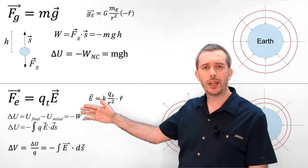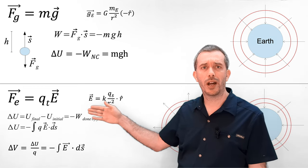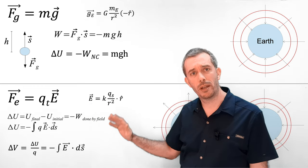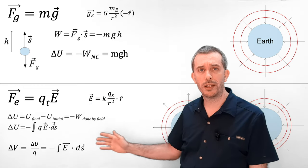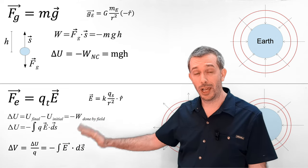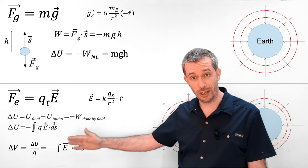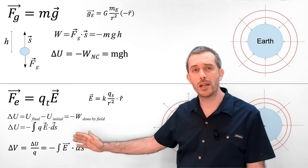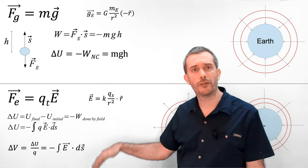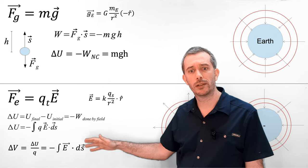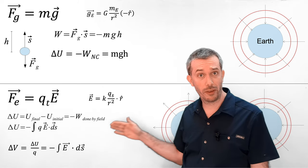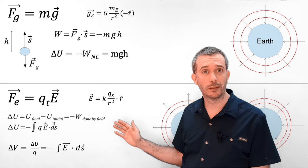So if I take the formula from before and I divide by q, I get something very simple: the change in electric potential is minus the integral of the electric field along the path that we are moving.